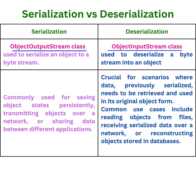Deserialization is crucial for scenarios where data, previously serialized, needs to be retrieved and used in its original object form. Common use cases include reading objects from files, receiving serialized data over a network, or reconstructing objects stored in databases.